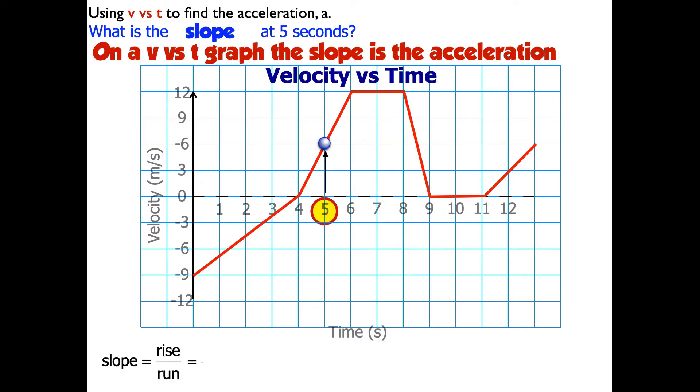So slope is rise over run. In this case, it's going to be the change in velocity divided by the change in time because the rise is delta V on this graph.